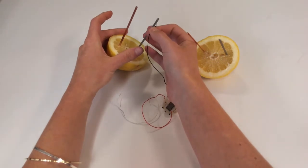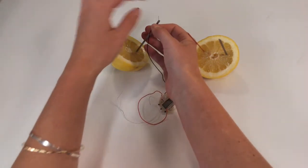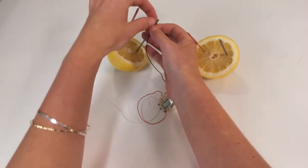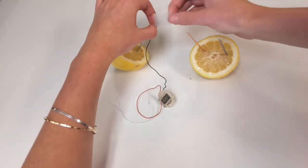You will then take the wire attached to the positive terminal and connect the free end to the zinc piece of one lemon half and secure the connection with tape.